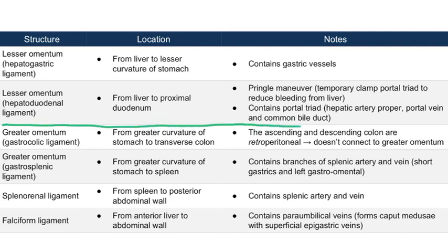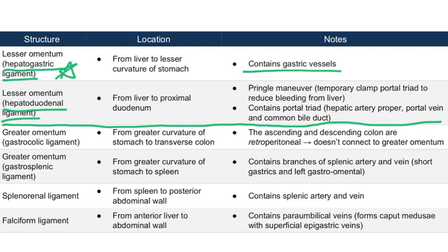The lesser omentum has two parts. It has a hepatogastric ligament and a hepatoduodenal ligament. The hepatogastric ligament contains gastric vessels, whereas the hepatoduodenal ligament contains the portal triad. This portal triad consists of the hepatic artery proper, the portal vein, and the common bile duct.